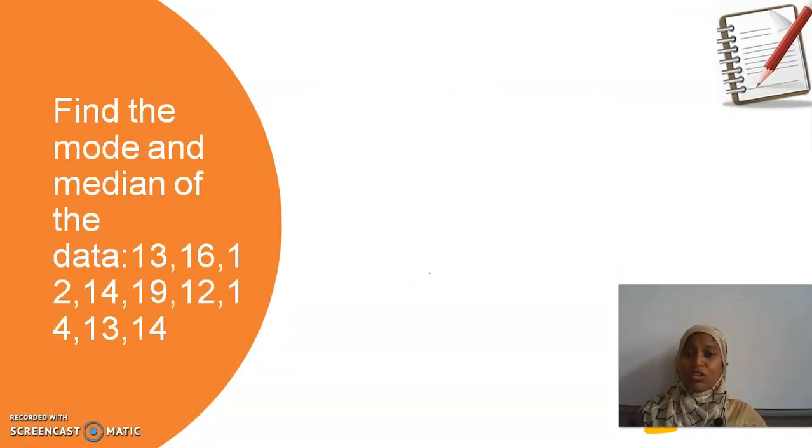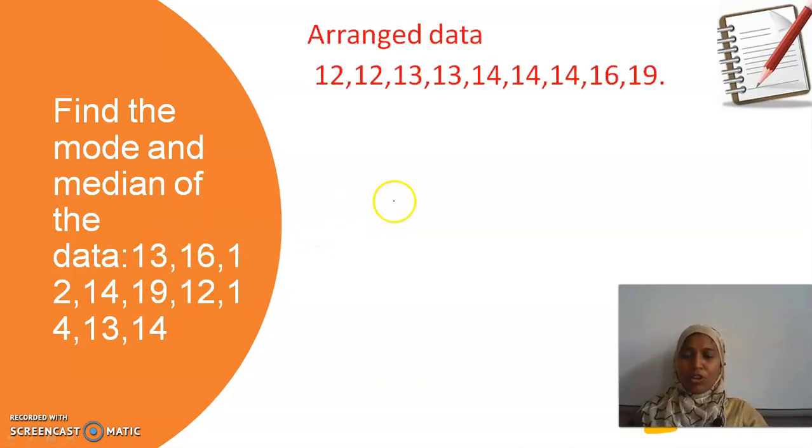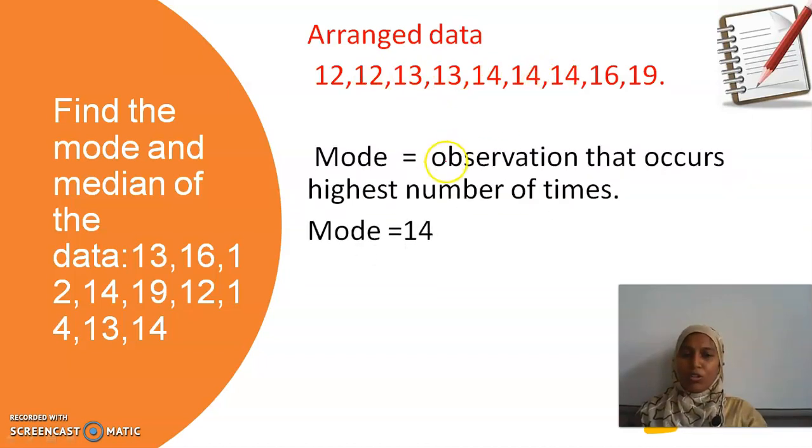Here is one special situation my dear children. Find the mode and median of the data. These questions are there in your book. First I have to arrange the data: 12, 12, 12, 13, 13, 14, 14, 14. From this, what is the mode? Mode is equal to observation that occurs highest number of times. Which is repeating many times? 14. So mode is equal to 14.